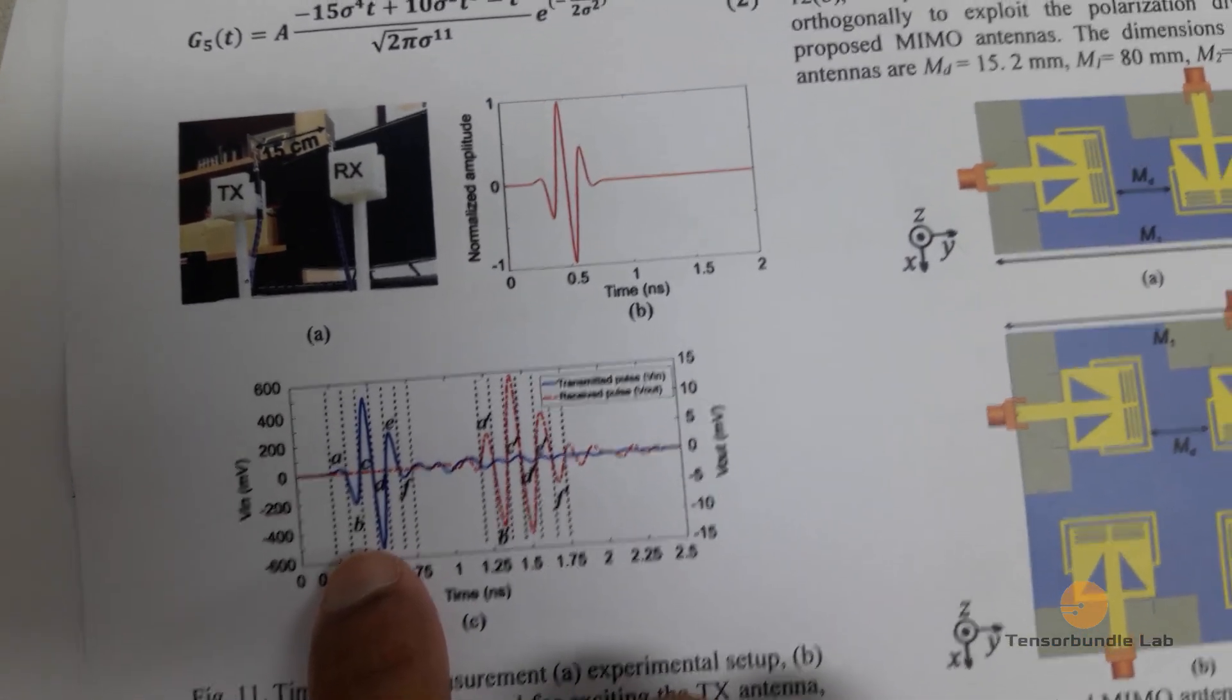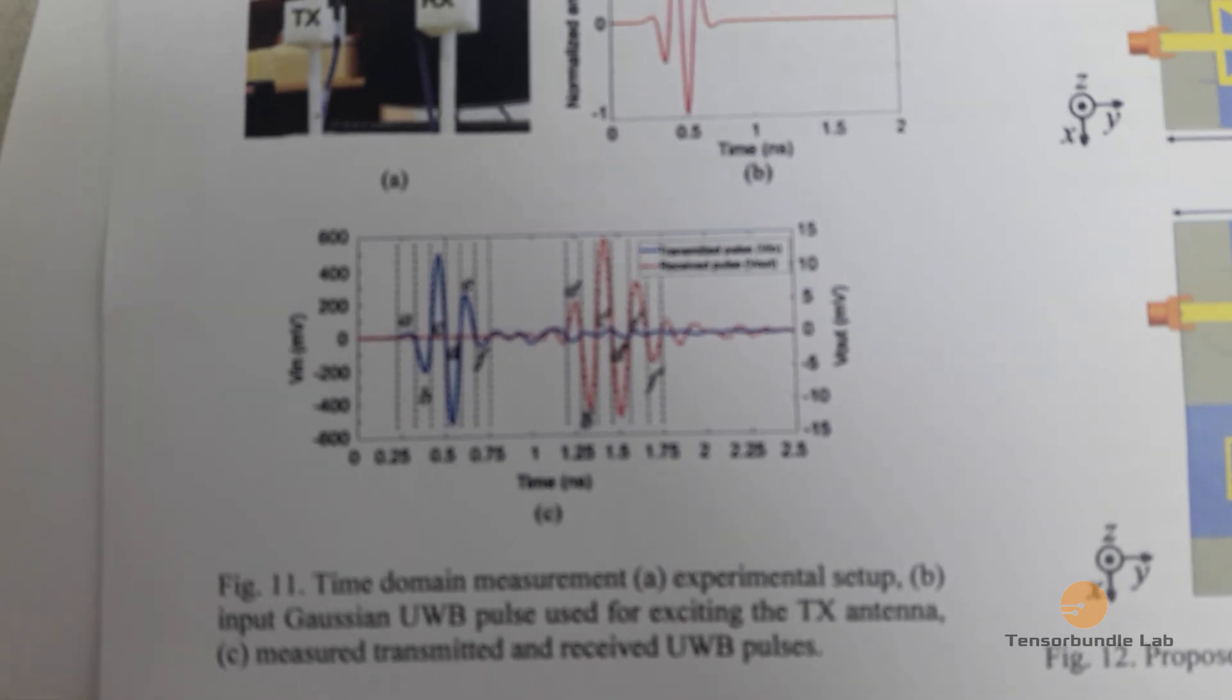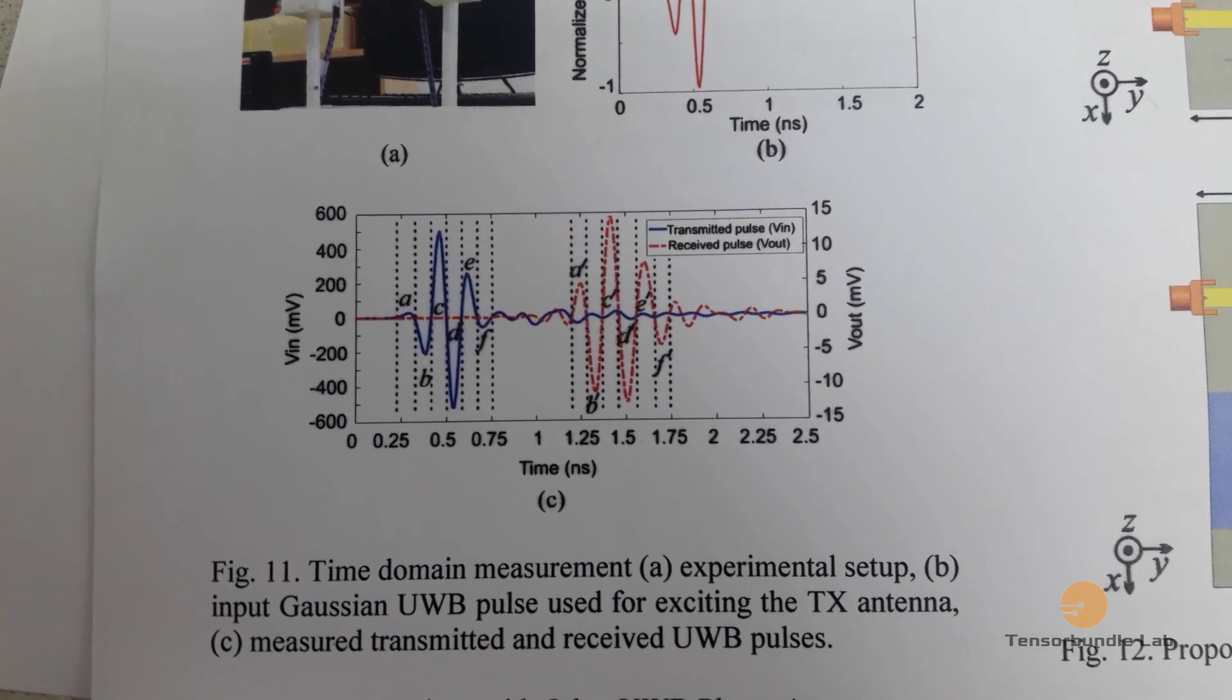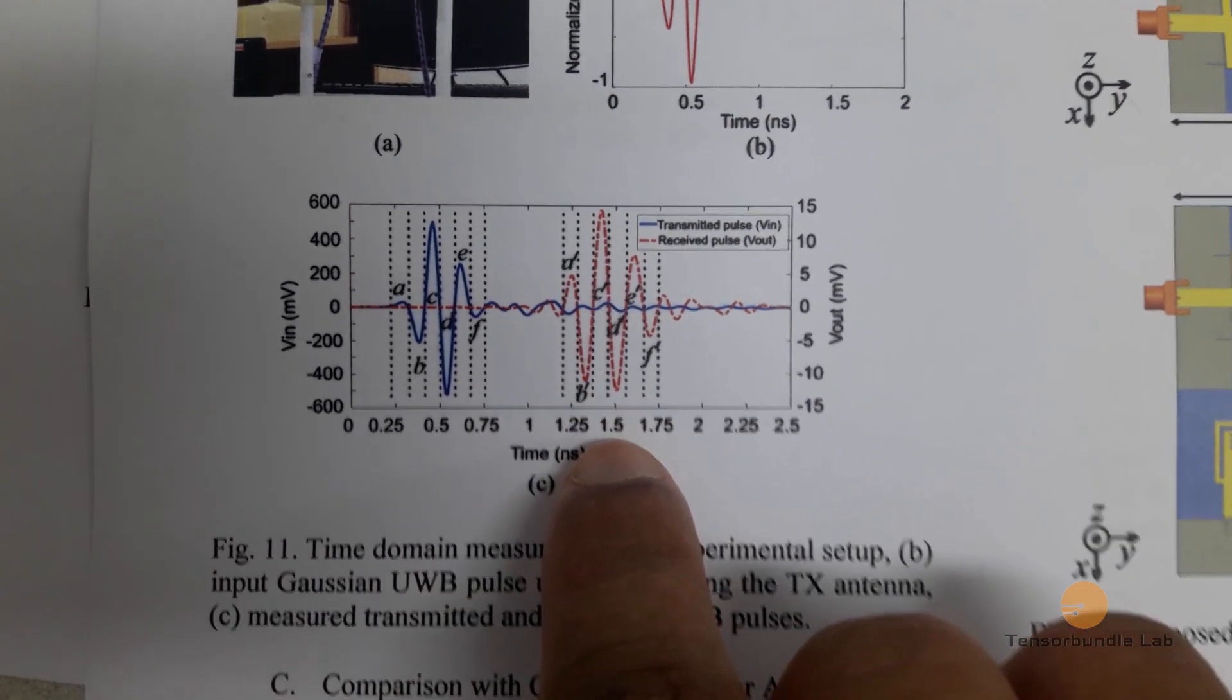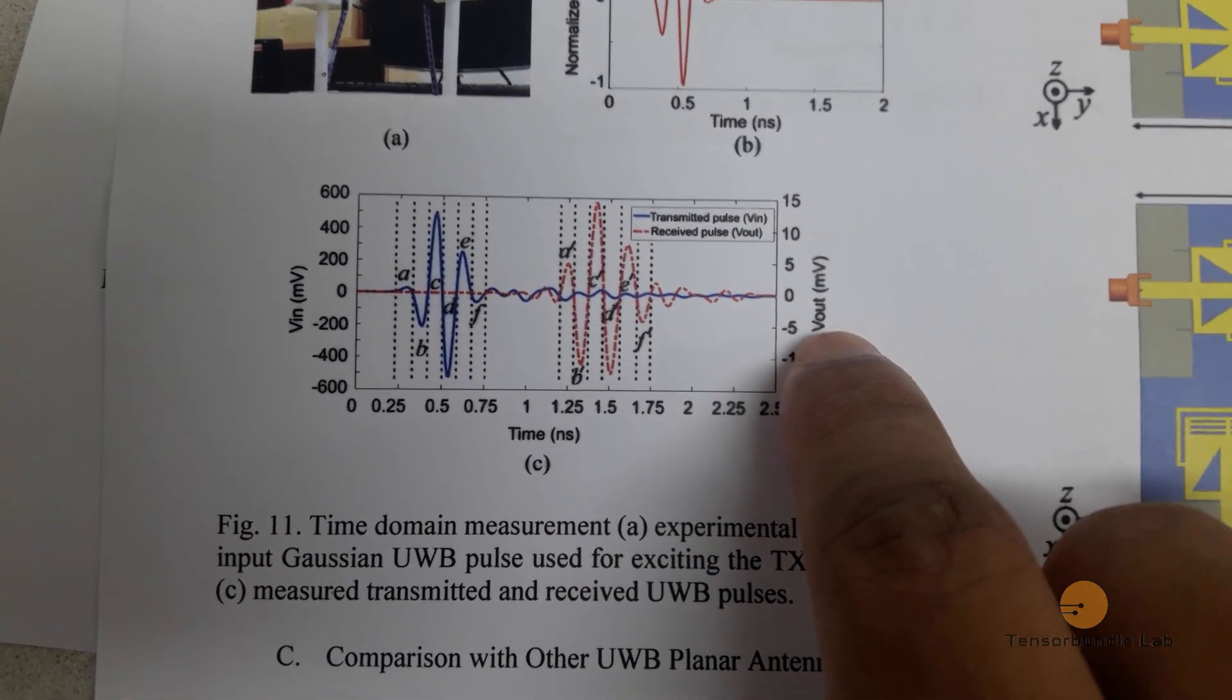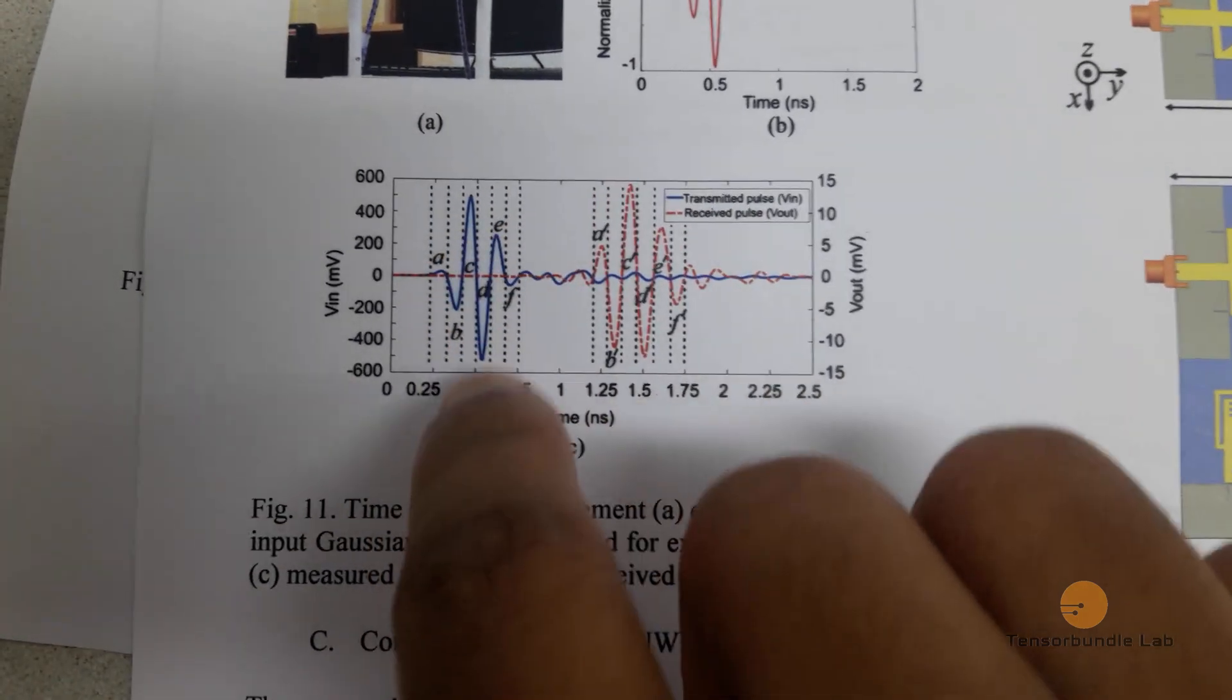This was the transmitted pulse and that was the received pulse. This antenna retains the shape of the transmitted pulse, and that means this is not a dispersive antenna. Any UWB antenna or wideband antenna should have this property for reliable communication. Because of the free space attenuation we obviously got less magnitude in the receiver antenna. You can see the peak to peak magnitude is almost 2 to 5 millivolts where the transmitted pulse was almost 1 volt.